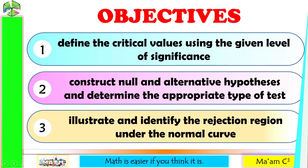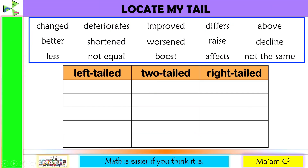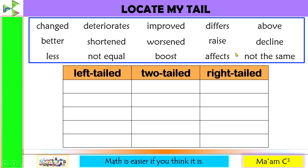Let's have a quick activity: locate my tail. In deciding whether to reject or not the null hypothesis, it is important that we familiarize ourselves in determining the type of test. From this word pool, let us put these words to the proper category. The first one — change — it does not imply any direction, so this is two-tailed.